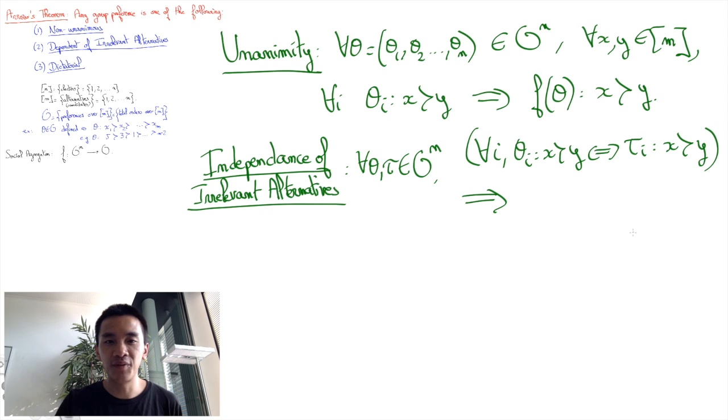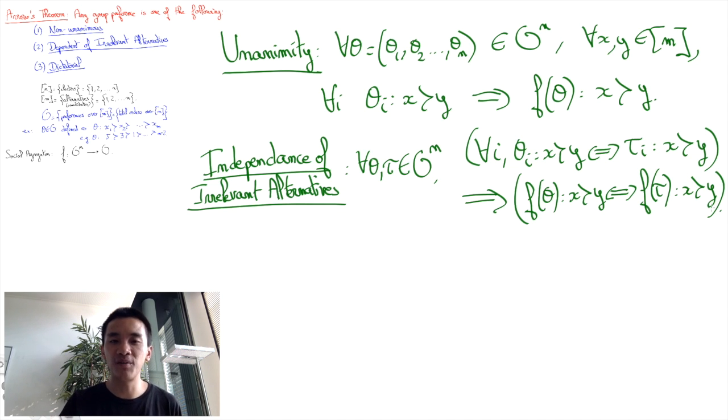then f of theta and f of tau must rank x and y identically as well, i.e., f of theta must put x ahead of y if and only if f of tau does the same.